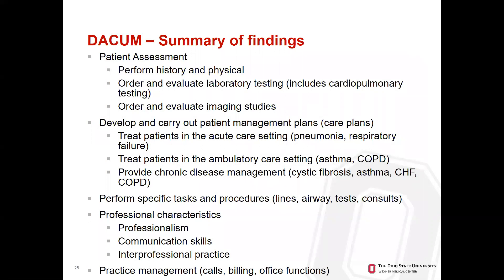They were then asked to rate each of those 163 tasks in terms of importance for the training and practice of an APRT. About 85% of those competencies — roughly 140 — were rated 3.5 or higher on a 5-point Likert scale of importance. Summarized into big buckets: patient assessment, developing and carrying out patient care plans, performing specific tasks and procedures, professional characteristics, and practice management skills. The ultimate goal of this process is to use the results to develop specific performance objectives, learning activities, and evaluation methods to build a curriculum. These results gave us more concrete direction than the needs assessment we conducted in Ohio.